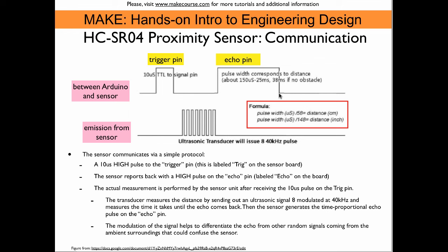So on the Arduino then, once we know the time for which this echo pin was high, we can use these formulas down here to calculate the distance in centimeters or an inch. So we just take the time in microseconds, divide it by 58 and we get the distance in centimeters, or we divide by 148 and then we get the distance in inches.